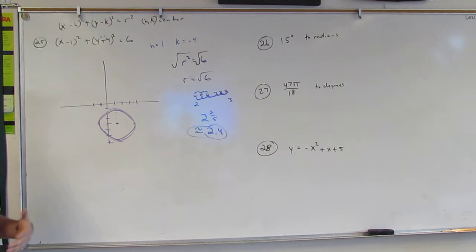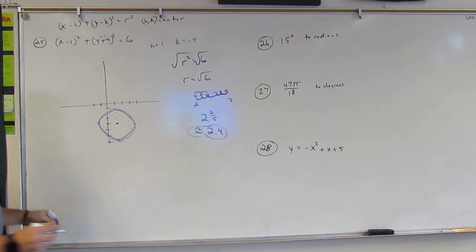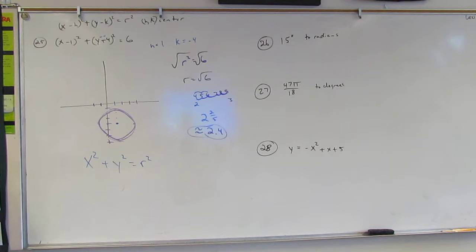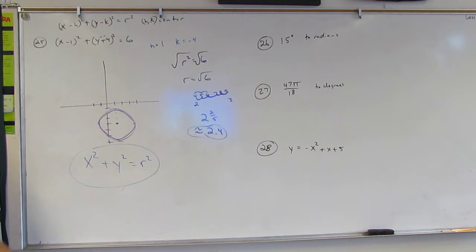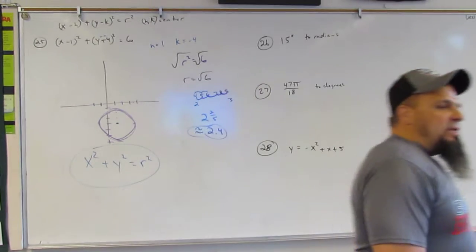The key to a circle is x squared plus y squared equals r squared. Then you just shift it: H moves it left or right, K moves it up or down vertically — just like the vertex formula. They use H and K for both.